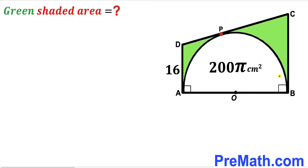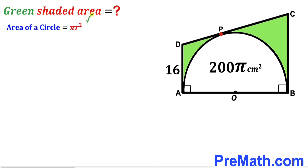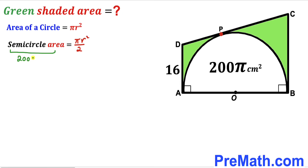In our first step, let's focus on the semi-circle. Its area has been given as 200π cm², and we are going to calculate the radius r. Recalling the area of a circle formula, area = πr², the semi-circle area is πr²/2. Substituting, we get 200π = πr²/2.